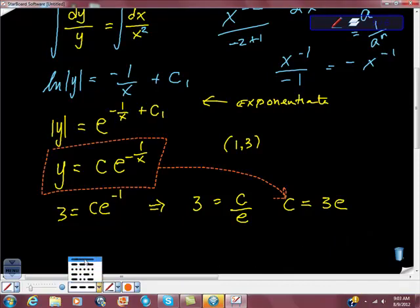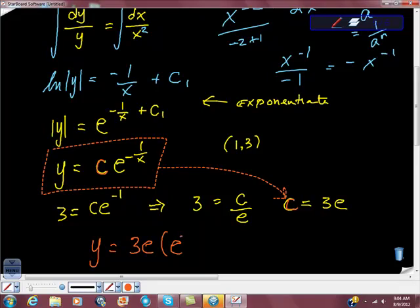Almost did mess that up. Because I was like, I think I'm done, but I'm not done. I have to take this and apply this to it. So this c right here is this c right here. So what I really have is y is equal to 3e times e to the negative 1 over x power.